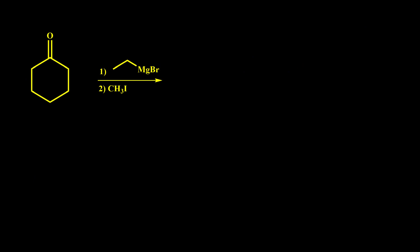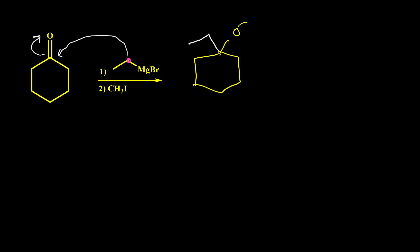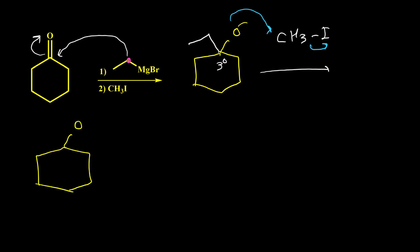In the last example, we again have a Grignard reagent. The carbanion easily attacks the carbonyl group and pushes the double bond, giving us the alkoxide anion. Keep in mind that this alkoxide anion is tertiary, so the only suitable reaction is with methyl iodide or iodomethane. If we add CH3I, the oxygen attacks and kicks iodine out, giving us the OCH3 ether as the final product.